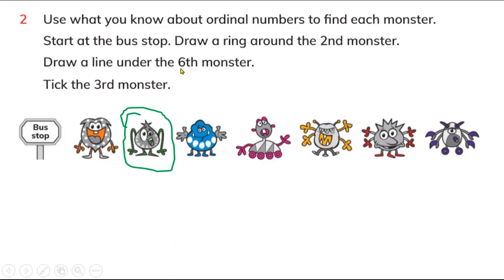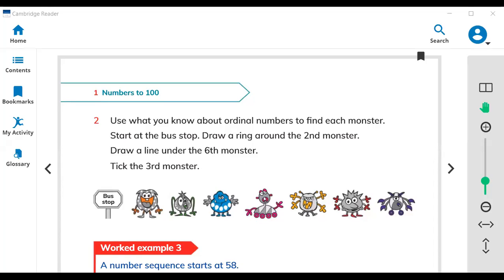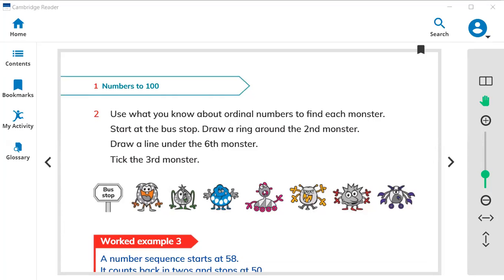Next, draw a line under the sixth monster. Count: first, second, third, fourth, fifth, sixth — this will be the sixth, so draw a line under it. Then tick the third monster. Count: first, second, third — this monster will be the third, so draw a check mark on it. In this way you order by first, second, third, fourth, fifth, sixth, and seventh.